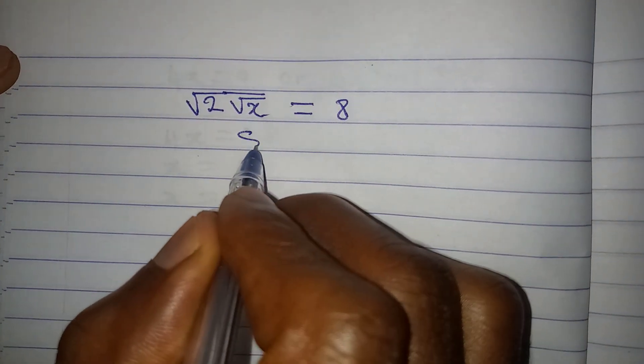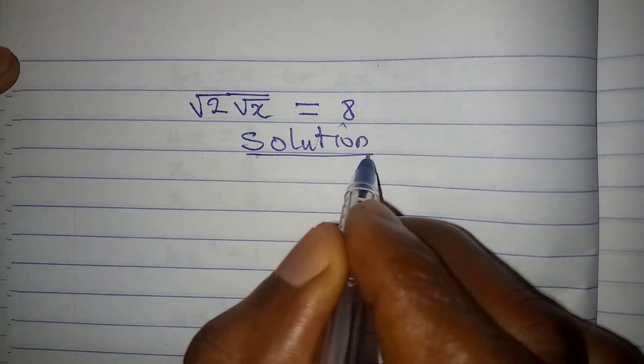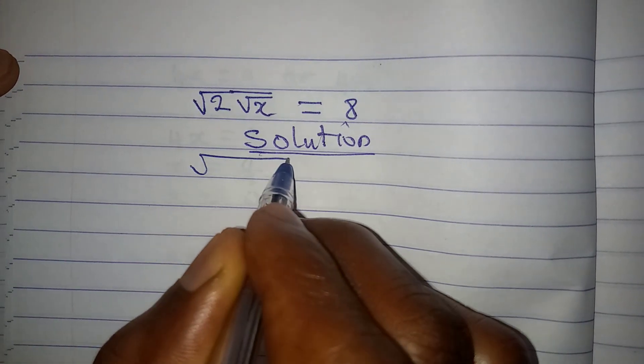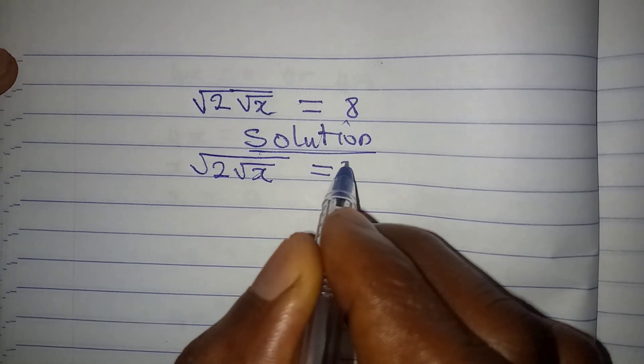Hello everyone, let's provide a solution to this problem: square root of 2 square root of x equals 8.